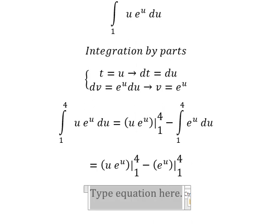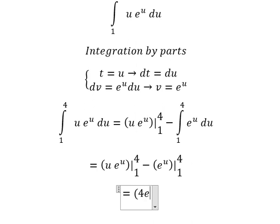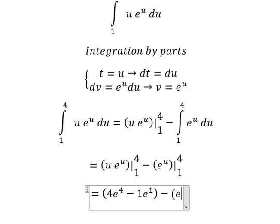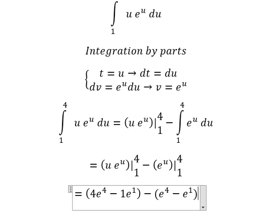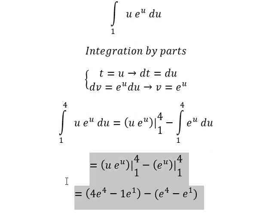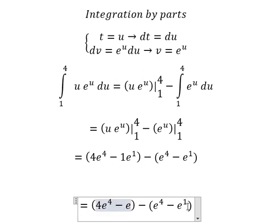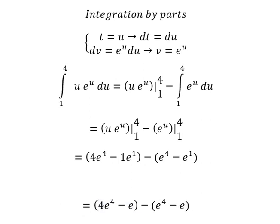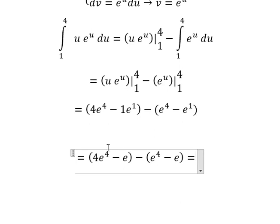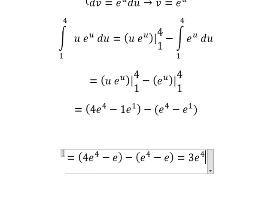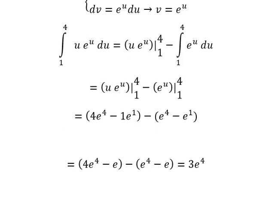Now we have the final answer. Substituting the bounds, we simplify: 4 minus 1 gives us 3e to the power of 4, and the negative and negative cancel to give positive e. This is the final answer. Thank you for watching.